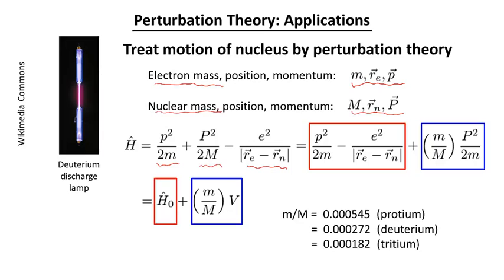Now we split this up into two pieces shown here. The one in the red box contains the electron kinetic energy and the interaction energy. And then the term in the blue box is the nuclear kinetic energy, the energy of motion of the nucleus.